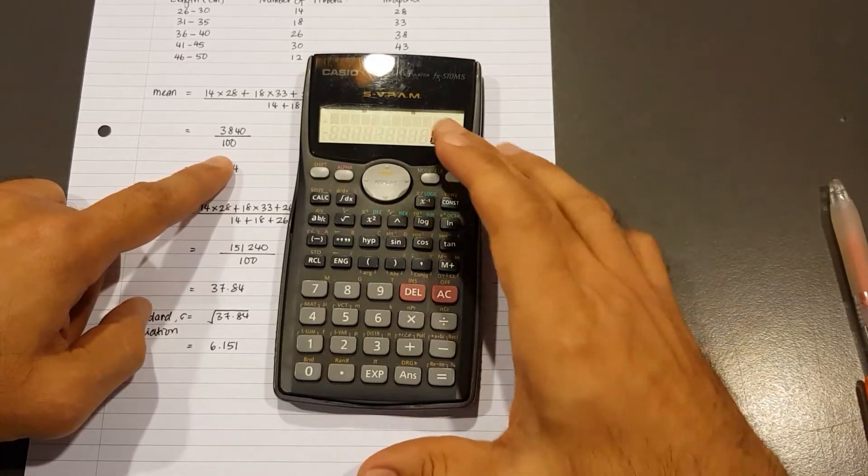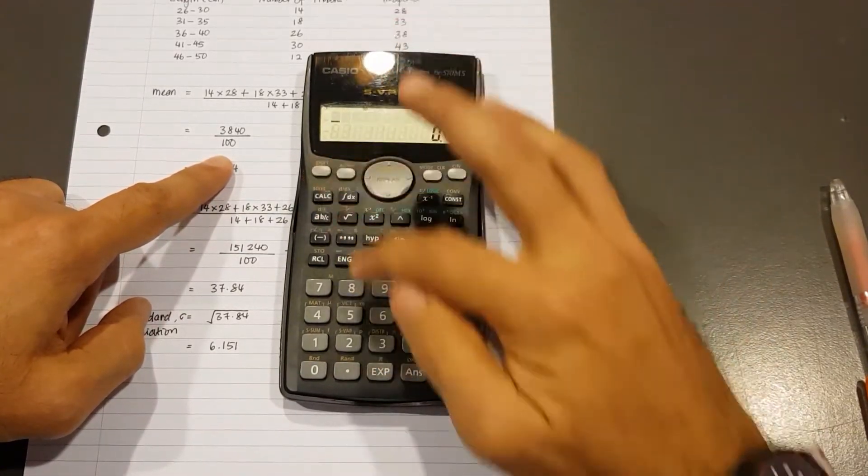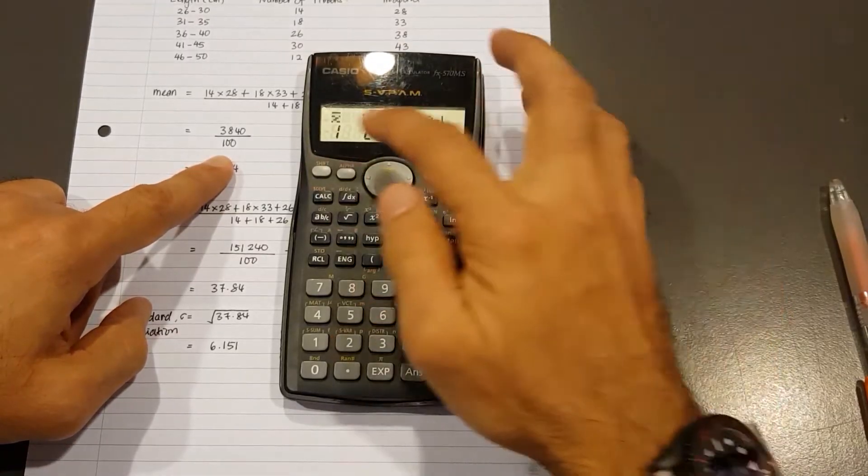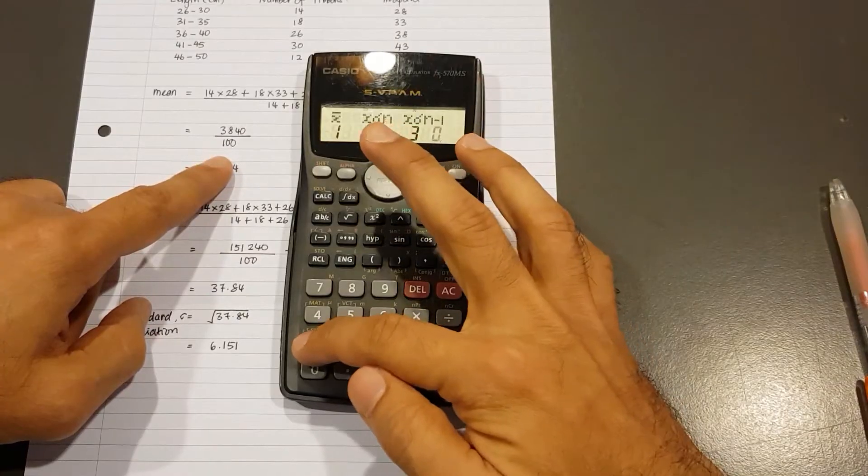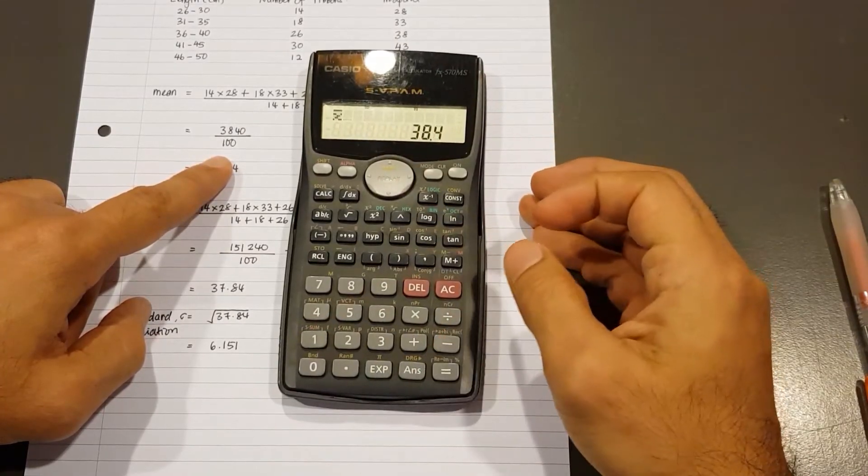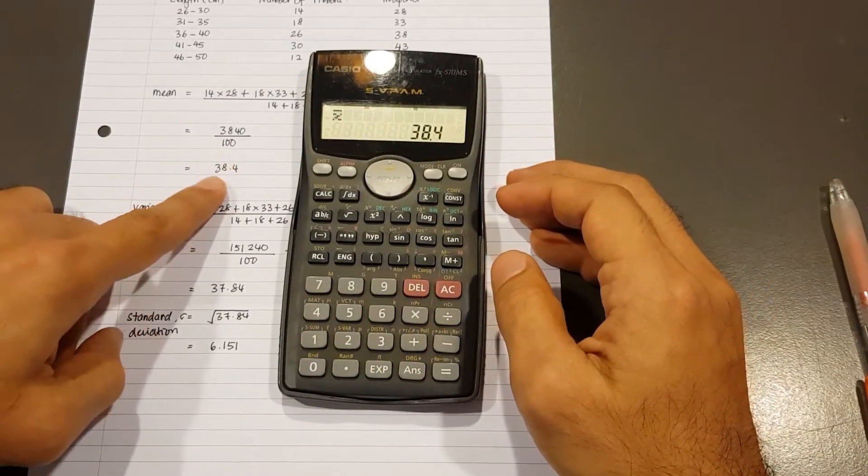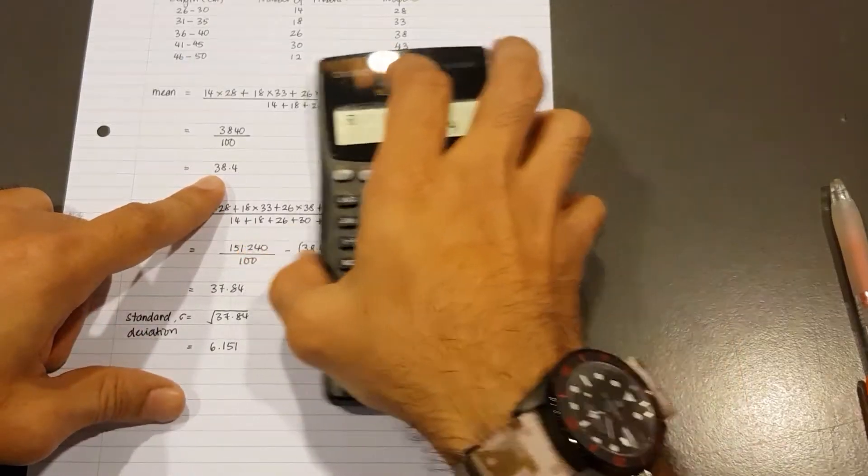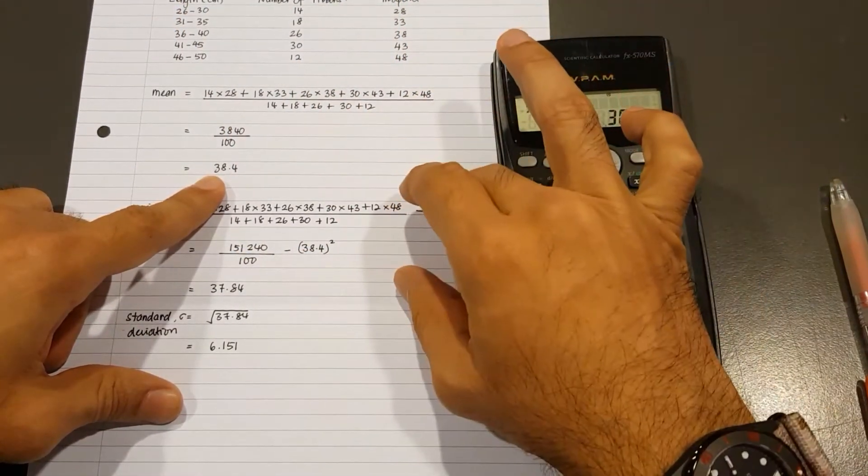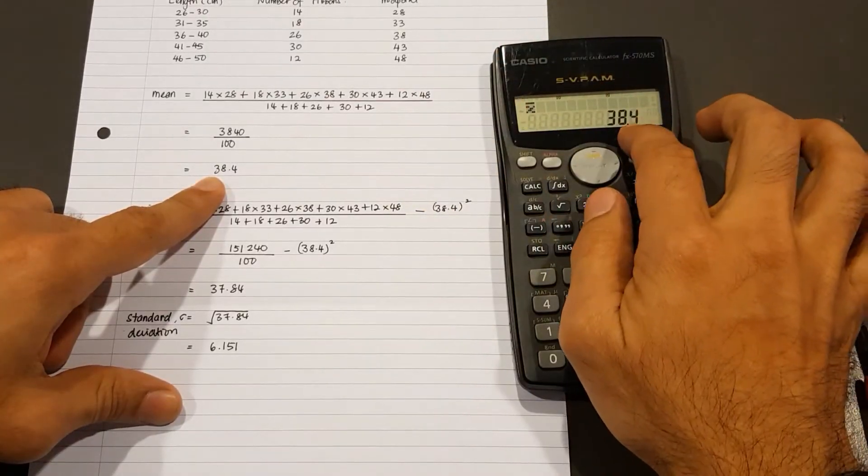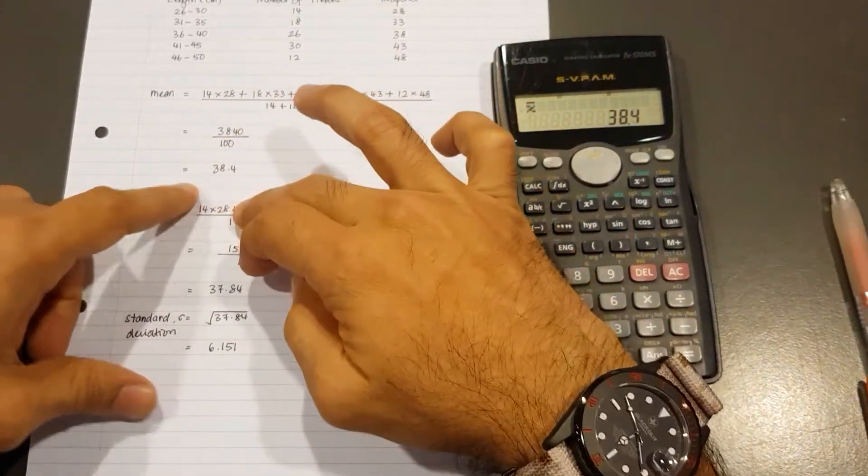Now, to obtain the mean value from the calculator, we press Shift and 2. Do you recognize the mean symbol? That's X bar. That's number 1. So I go ahead and press number 1 and I press equal to and I get 38.4. That's right there. Now, of course, we have to prepare the calculation or the working and then we can get the values from the calculator and just put them in.